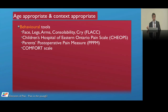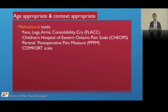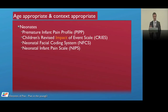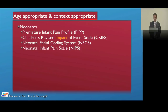For behavioral tools in those without cognitive impairment: FLACC — Faces, Legs, Arms, Cry, Consolability — where you add up scores and a number above or below a threshold means something. The Children's Hospital of Eastern Ontario Pain Scale (CHEOPS), the Parents' Postoperative Pain Measure for parents to assess behavior, and the Comfort Scale which is quite elaborate. For neonates: the Premature Infant Pain Profile, the Children's Revised Impact of Event Scale (CRIES), the Neonatal Facial Coding System, and the Neonatal Infant Pain Scale.